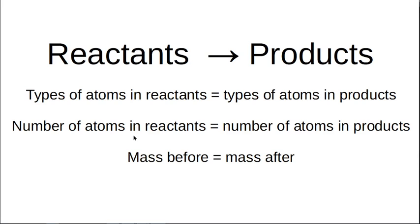The number of atoms in the reactants is equal to the number of atoms in the products — this is what the balancing is all about. The molecules on the left and the right can be different, but there's a big difference between an atom and a molecule. That's why we count the atoms and not the molecules. Matter can neither be created nor destroyed; it's merely transformed. The mass before equals the mass after.